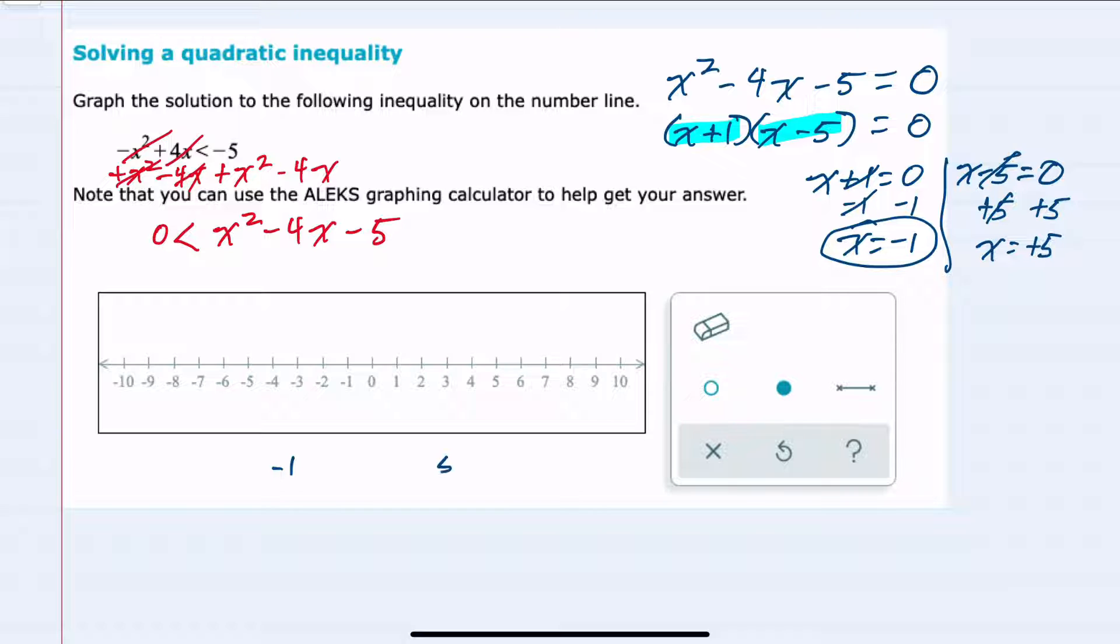So our two points here are negative 1 and 5. I'm gonna look at what happens to each one of these functions to the left of negative 1, between those two values, and to the right. Starting with our first factor, x plus 1 would be negative if I plugged in any values less than negative 1, and it would be positive for any values greater.